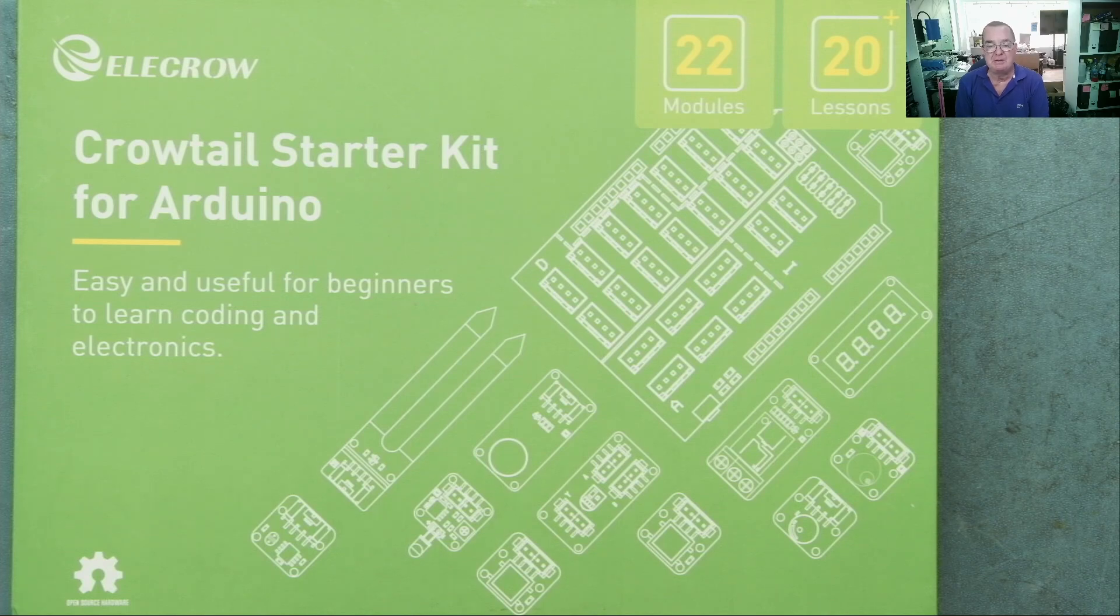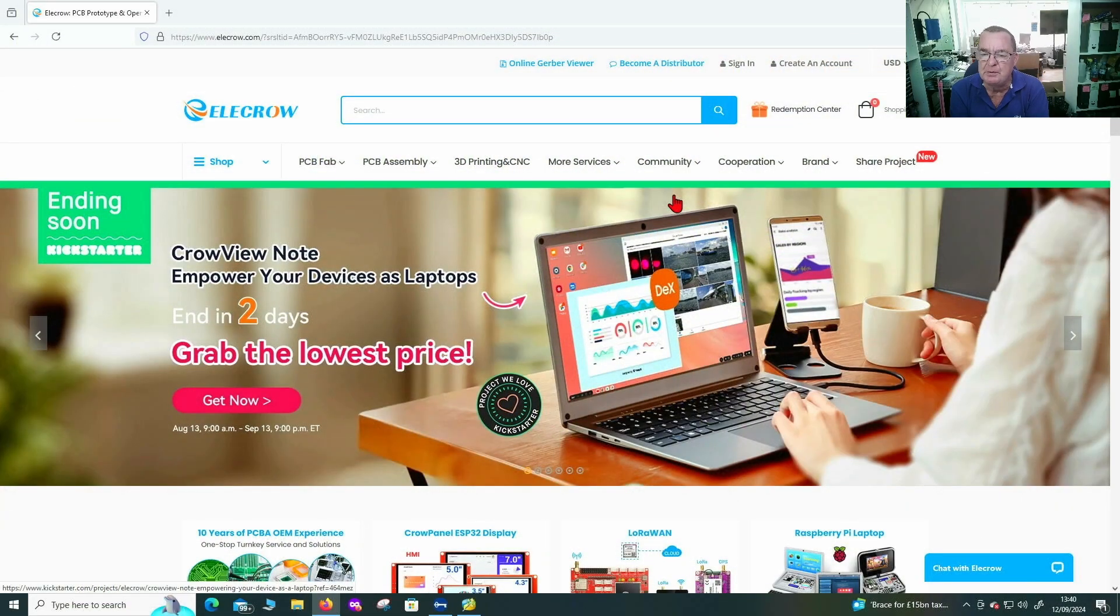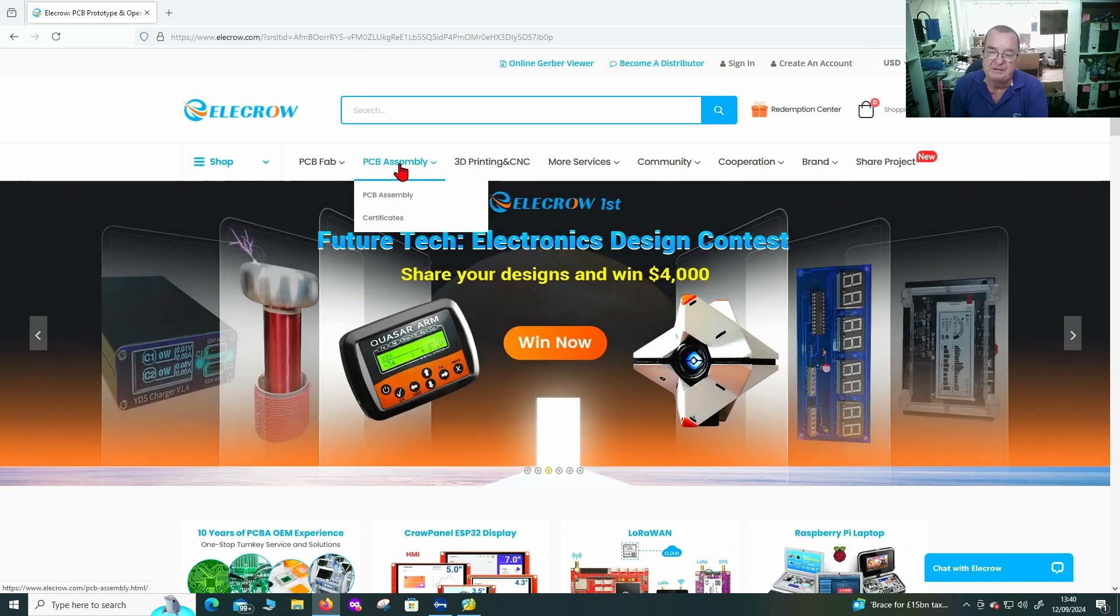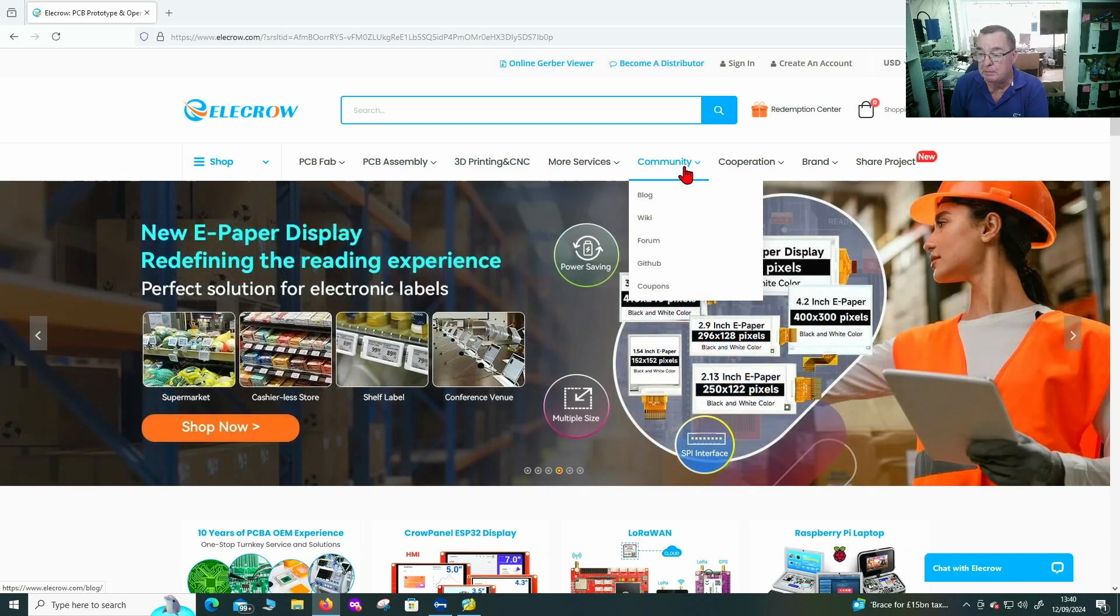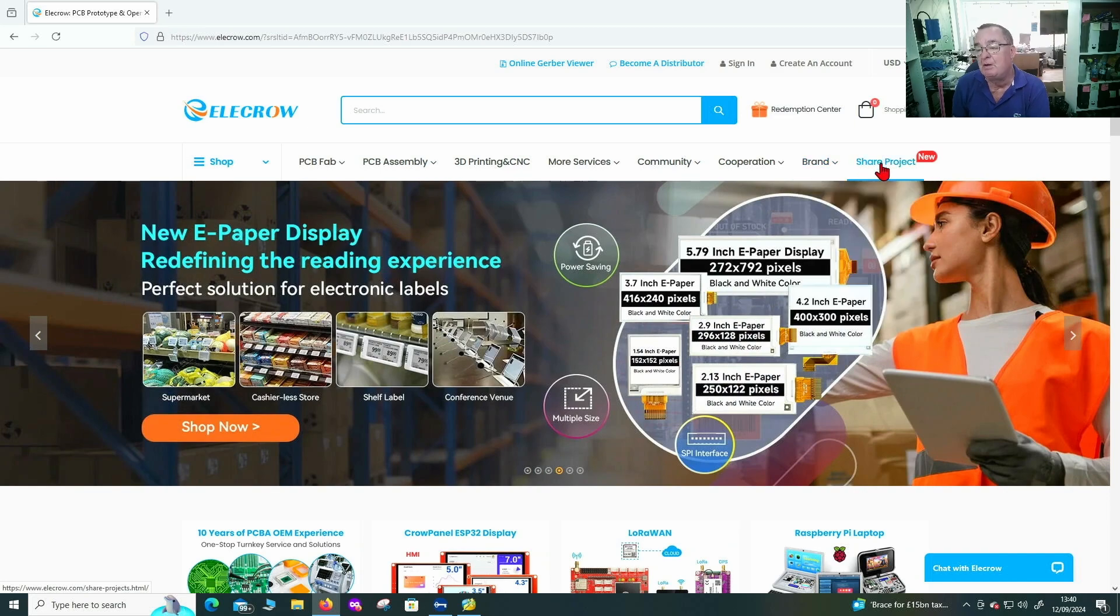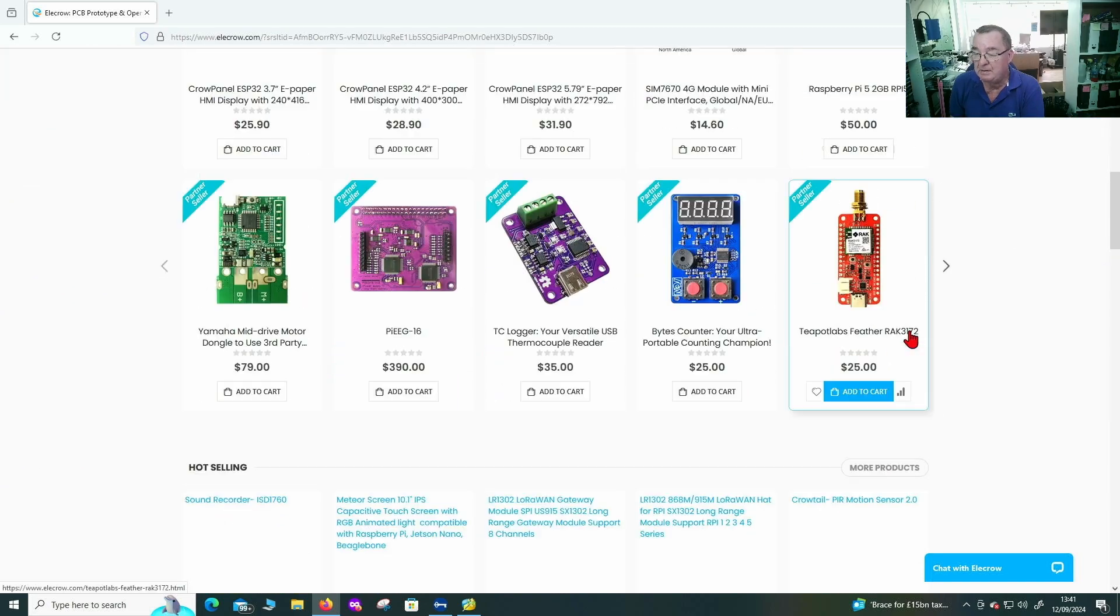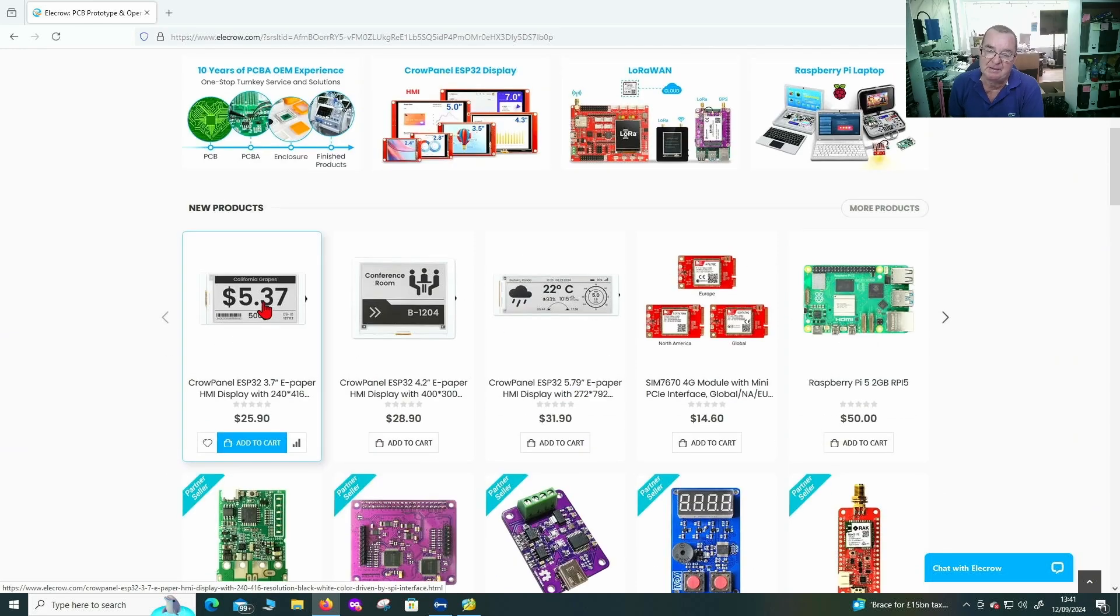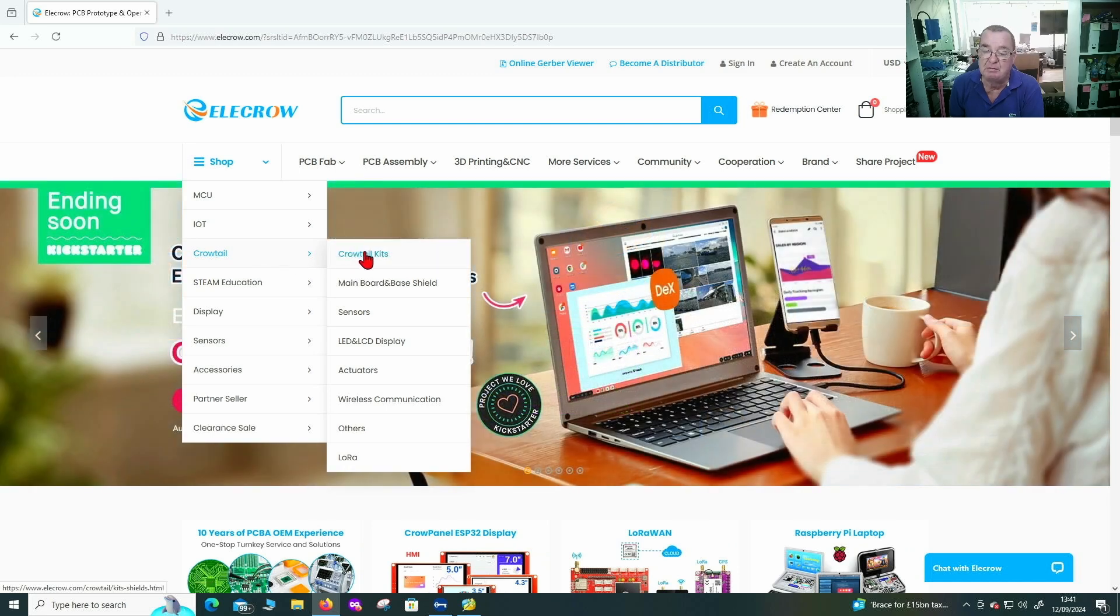She is actually going to be our guinea pig for this experiment. But for now let's look at this Crowtail start kit on the Elecrow website. What does it contain and how much does it cost? I'm sure quite a few of you will actually know this company. They're quite well known as a supplier of electronics kits and modules.